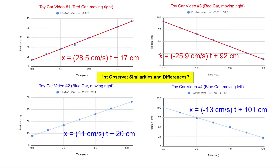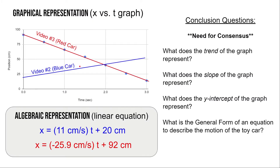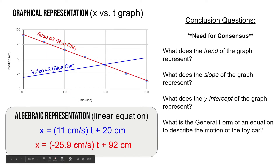Let's get into a little bit more depth to explain what those similarities and differences actually mean. After observing similarities and differences, these are the key questions we're going to try to answer: number one, what does the trend of the graph represent? We already said it's linear — what does that tell us? Number two, what does the slope of the graph represent? We got a number and a unit, and it means something about the thing we're investigating, in this case the toy car. Number three, what does the y-intercept of the graph represent? Here I picked video 2 and video 3, which have pretty different y-intercepts and pretty different slopes.